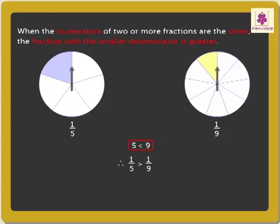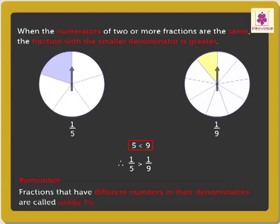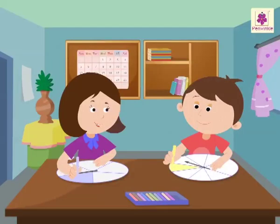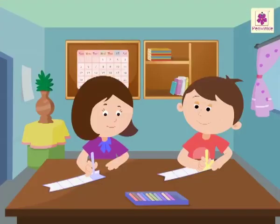As five is smaller than nine, so we can say that one-fifth is greater than one-ninth, or one-ninth is less than one-fifth. Remember, fractions that have different numbers in their denominators are called unlike fractions. This time Anaya was quicker than Andy in coloring.